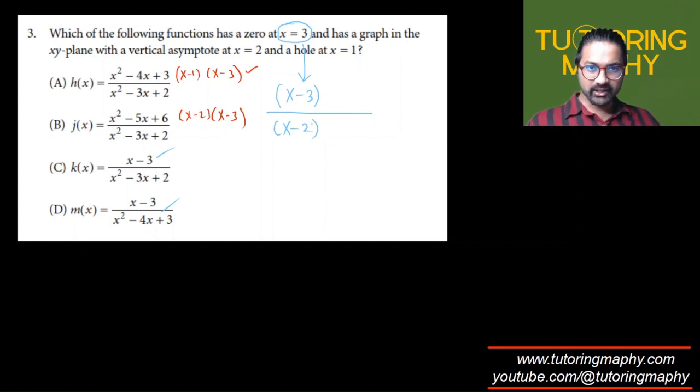So either the numerator should not have it entirely, or even if it has it, it should have a lower degree. Now let's see which options have an (x - 2) at the bottom. So if you were to factorize this, this will become like (x - 1)(x - 3), and clearly this cannot be the answer because (x - 1)(x - 3) does not have (x - 2) anywhere, and at least I need an (x - 2) at the bottom.